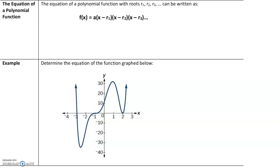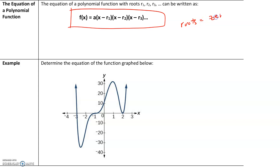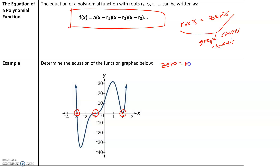The equation of a polynomial function is f of x equals x minus r1 times x minus r2 times x minus r3, where r1, r2, and r3 are the roots. The roots are the same thing as zeros — this is where the graph crosses the x-axis. Now we'll determine the equation of a graph. First, identify our zeros: we have a zero at negative three, a zero at negative one, and a zero at two.